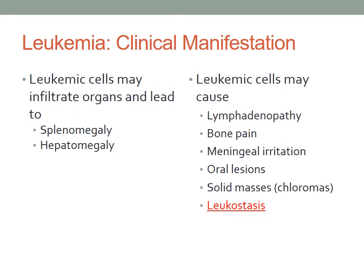As leukemia progresses, fewer blood cells are produced and abnormal white blood cells continue to accumulate. This accumulation occurs because they do not go through the normal cell life cycle, also known as apoptosis. The leukemic cells may infiltrate the patient's organs, leading to problems such as splenomegaly, hepatomegaly, lymphadenopathy, meningeal irritation, bone pain, and oral lesions.